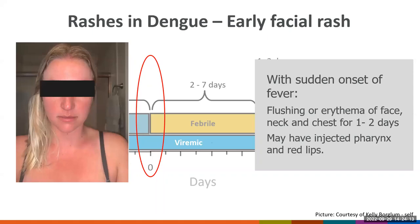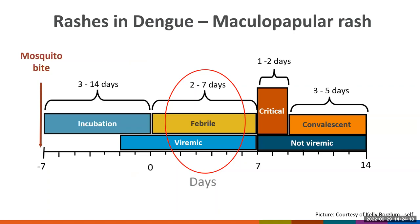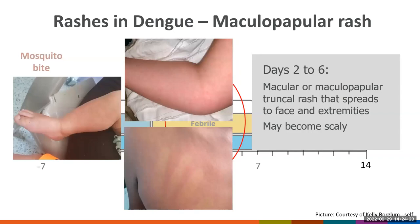During the febrile phase, on days 2 to 6, patients may present with a maculopapular rash that usually starts in the trunk and spreads to the face and lips. It is blanchable and may become scaly.